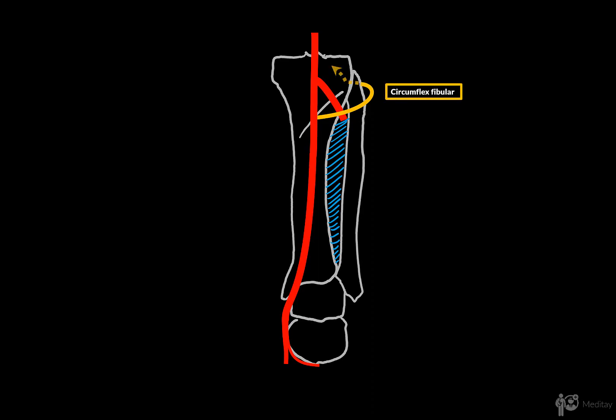The first side branch is the circumflex fibular artery, which you may already know from the patellar network. This one winds around the fibular head and goes anteriorly to supply the knee with blood. Then there's the fibular artery, sometimes also referred to as the peroneal artery. It starts from the upper third of the posterior tibial artery and descends along the posterior medial aspect of the fibula, ending at the calcaneus as a terminal branch called the calcaneal artery.